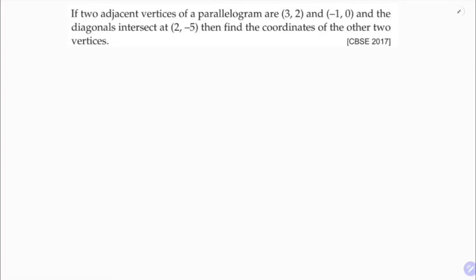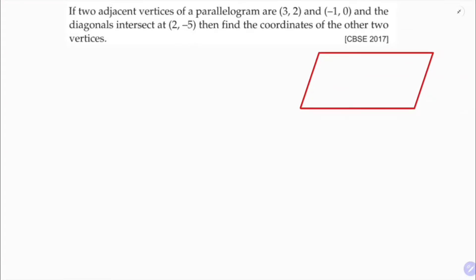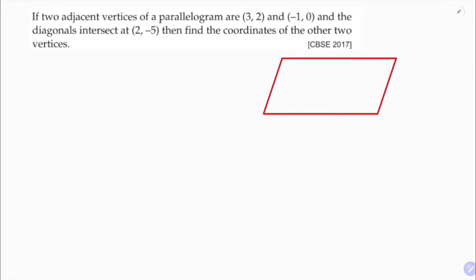So here the parallelogram is ABCD. So two adjacent vertices, (3,2) and (-1,0). C I will take as (a,b) and D I will take as (x,y).